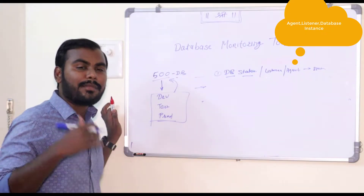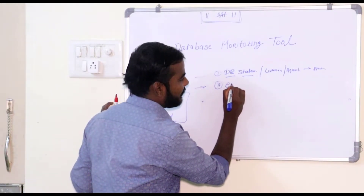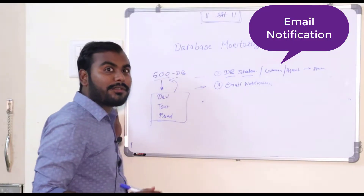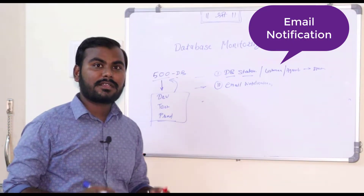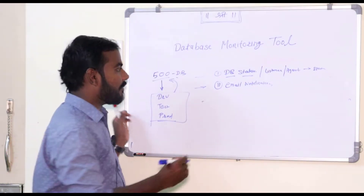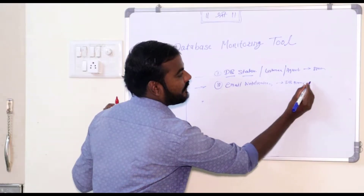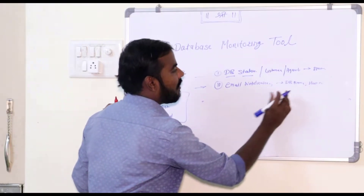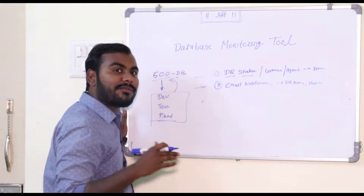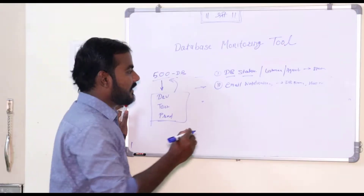If any database goes down, an email will be triggered to the DBA group. The second important feature is email notification. Once you get the email notification, you can take all the necessary actions. In that email, you will find the database name where the problem is, along with the host name. From the email itself, you will understand where the problem is, and you just need to log into the server, connect to the database, and do the analysis.